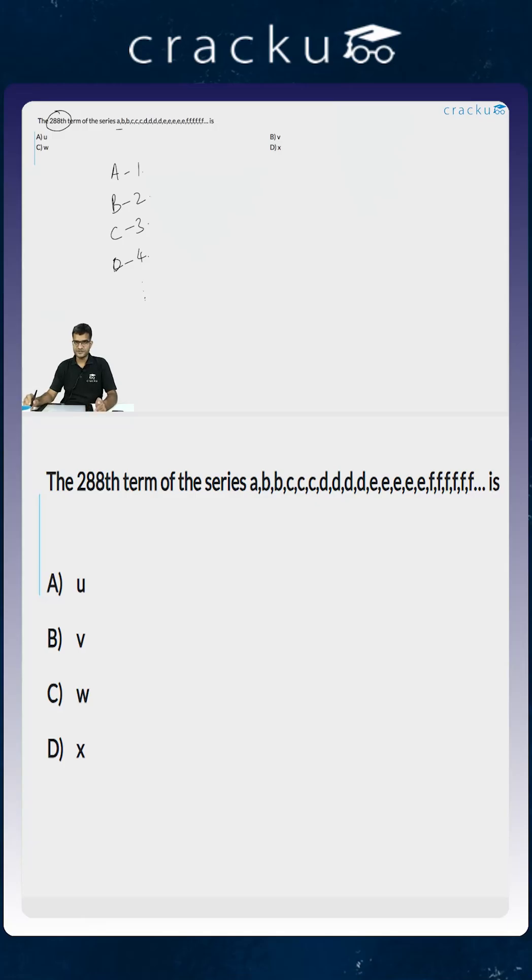So after the first alphabet is over, the total alphabets counted is one, which is just A. After B is over, the total number of alphabets is one plus two, which is three. And then we have three C's, so the total number of alphabets that are over is six. And then we have four D's, so the last D, so to say, is the 10th alphabet.